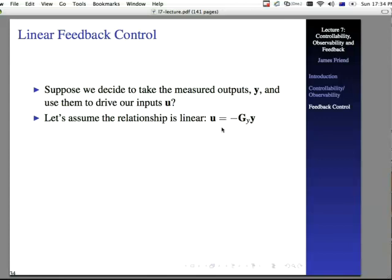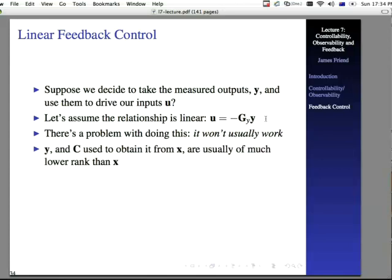Why don't we assume that this relationship is linear? So, what we're going to put in the system, u, is equal to minus some sort of gain matrix, G sub y, times what we get out of the system, y. The problem with this is that it usually won't work. The reason is that because y and C used to obtain it from x are usually much lower rank than x. In other words, the state of your system usually has a much larger number of variables in it than y does. If you notice from a lot of the examples we've shown, we have a single output that we're measuring, but there's a lot more going on in the system itself.